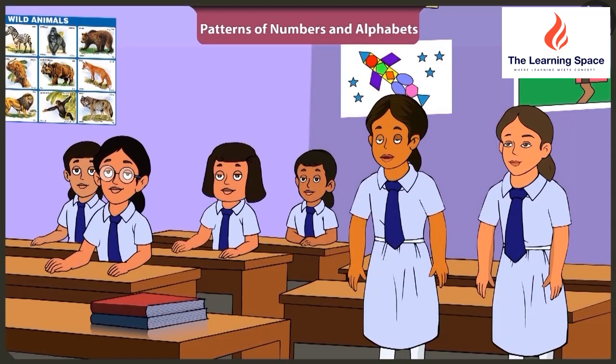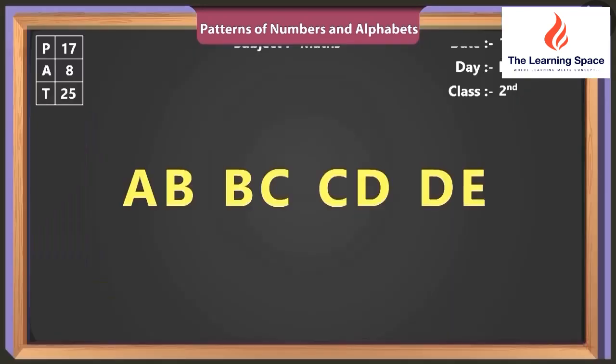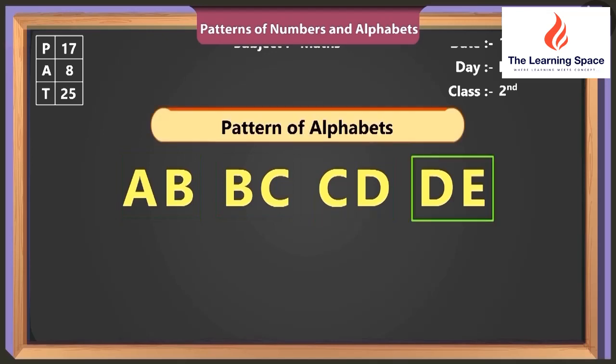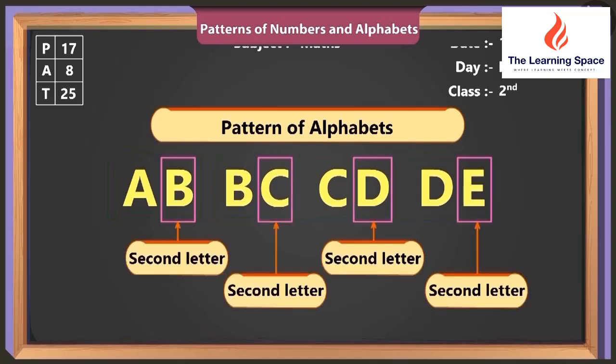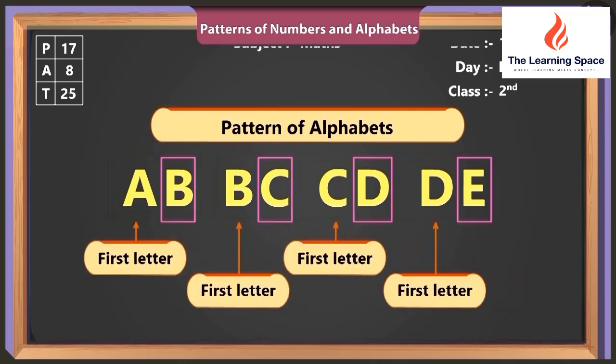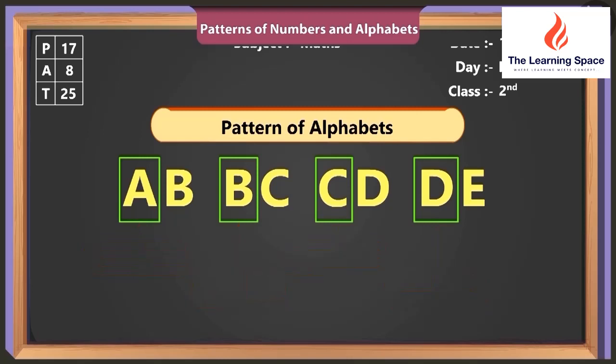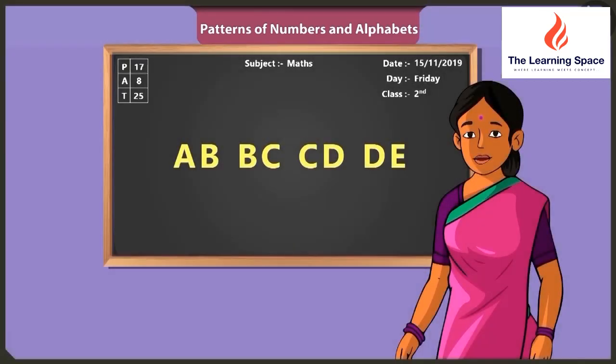Ma'am, we want to know more about patterns. Okay. So come on, can you identify this pattern? A, B, B, C, C, D, D, E. Here each term is of two alphabets. The second alphabet of the first term becomes the first alphabet of the second term, and the pattern is getting built further. Very good, Vinny.